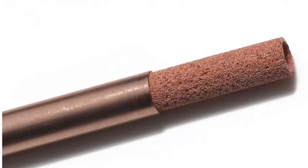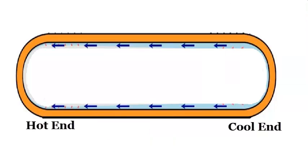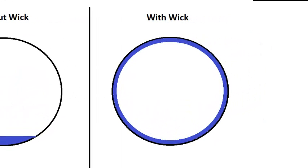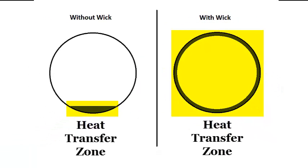In the 1960s, NASA solved this problem by introducing a metallic wick on the inside of the pipe. Heat pipes with internal wicks rely on capillary action rather than gravity to return liquid working fluid to the hot end. The wick also distributes the liquid around the entire inner perimeter, greatly increasing the effective surface area for heat transfer.